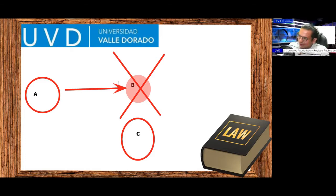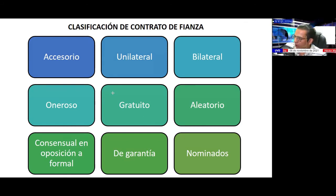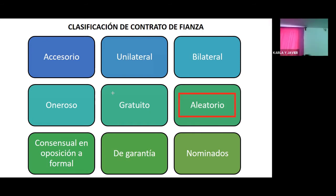Looking at another type of contract: why is the contrato de fianza considered aleatorio? Because it depends on the debtor's non-fulfillment. If the debtor does not default, there will be no intervention as fiadores. If there is default, that is when the fiador must fulfill the charge imposed — that is why it would be aleatorio. We cannot have the certainty that the contract will be fulfilled.